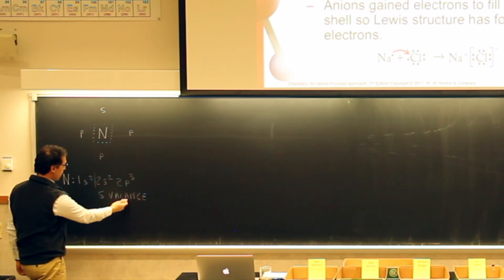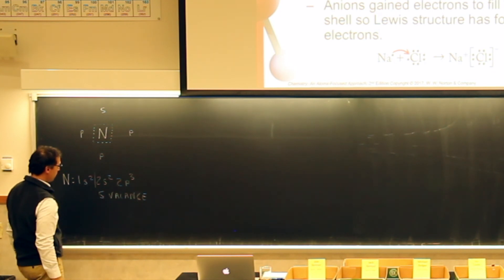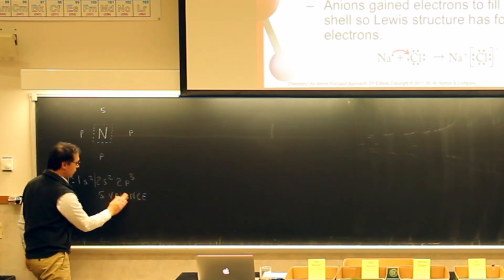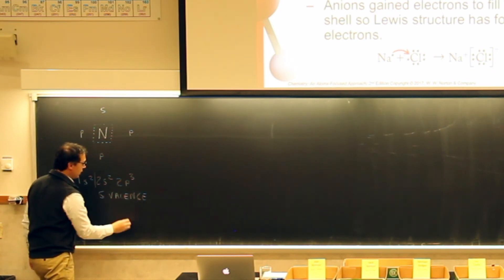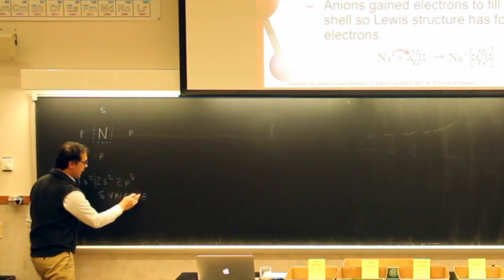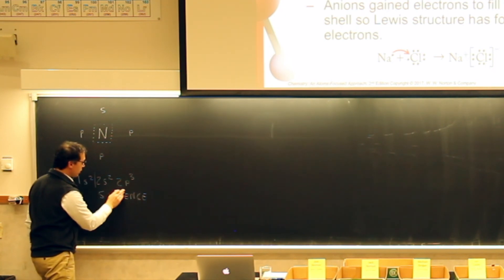One note: 'valence' is spelled with an E. This blackboard is old school and doesn't have spell check on it.